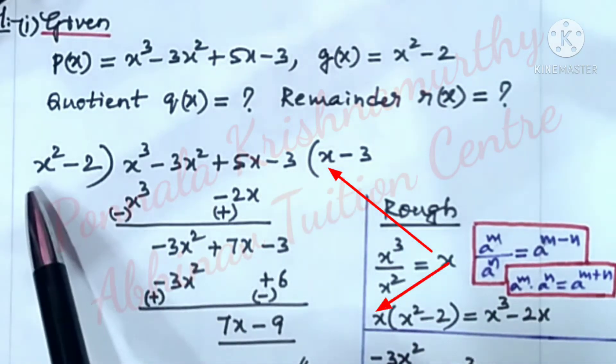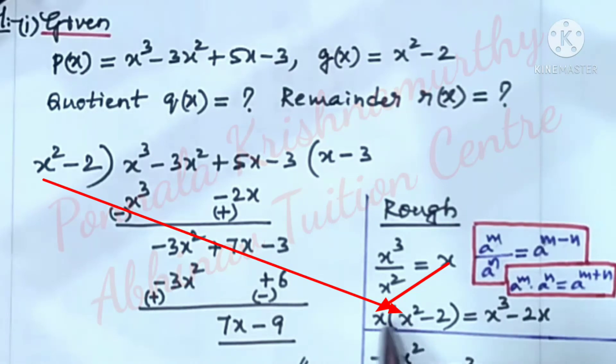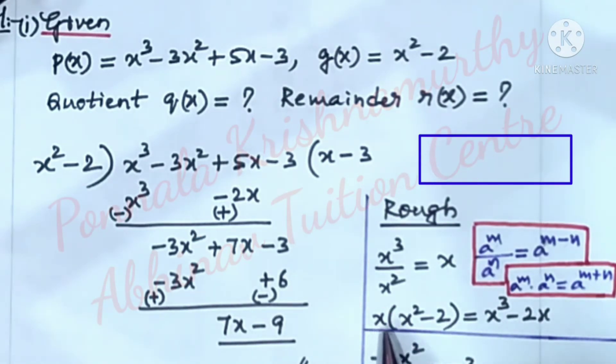Then, this x into x² - 2. Here we have signs, numbers, variables, plus into plus is plus. 1 into 1 is 1. x into x² is x³.